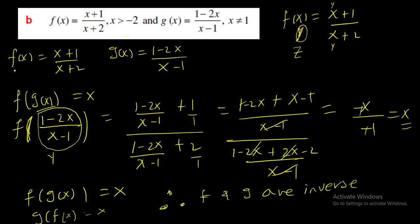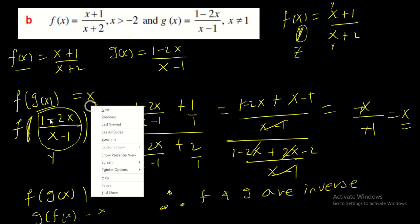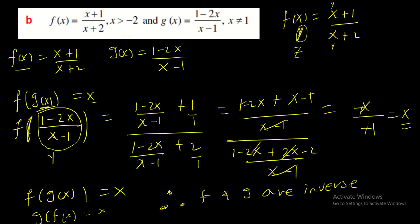To recap: f(x) = (x + 1)/(x + 2) and g(x) = (1 - 2x)/(x - 1). To verify they are inverses, we compute f(g(x)). Treating g(x) as the input y, f of y is (y + 1)/(y + 2). Substituting and performing the cross-multiplication process, the (x - 1) terms cancel and we are left with x. Therefore they are inverses of each other.